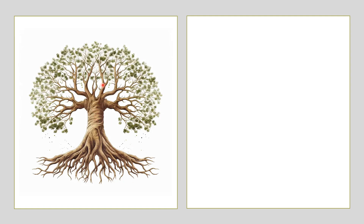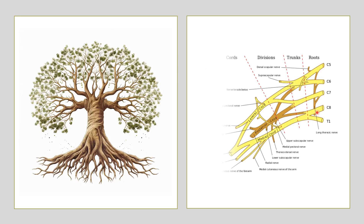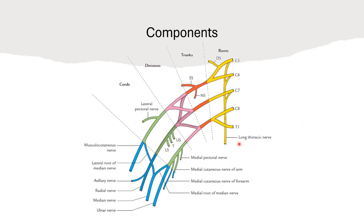To understand the brachial plexus in a simple way, let's take the analogy of a tree. The tree has roots, a trunk, branches and sub-branches. In the same way, the brachial plexus has roots, trunks, divisions and cords — the divisions and cords being like the branches of the tree. The cords give branches which supply the arm, forearm and hand. The entire upper limb is supplied by the branches of these cords.